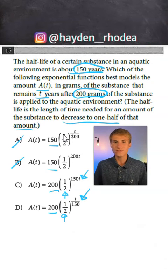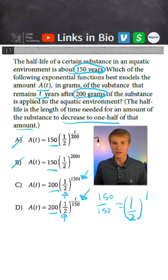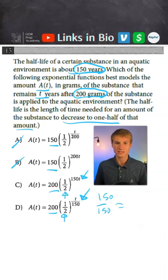Because it takes 150 years for us to have one half-life, we need to have T over 150 as our exponent. Because if we were to put in 150 years over 150 years, that would give us one-half to the power of one, which tells us that we are decreasing our population by one-half after 150 years, which is exactly what was said in our prompt. So D is our answer.